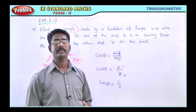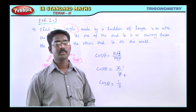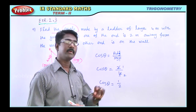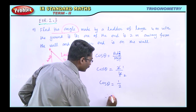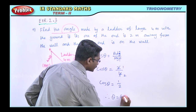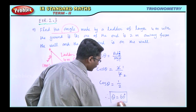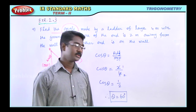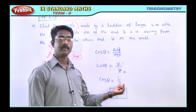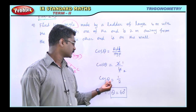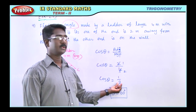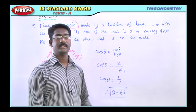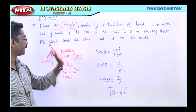Checking the trigonometric table for 60°, 30°, 45°, and 90°: cos 60° is equal to 1 by 2. Therefore, theta is equal to 60 degrees — the angle made by the ladder with the ground is 60 degrees.